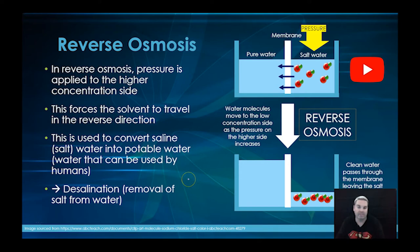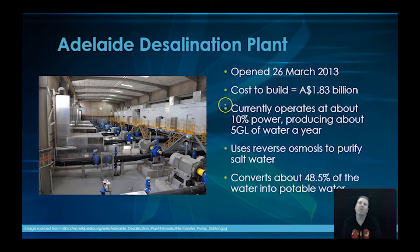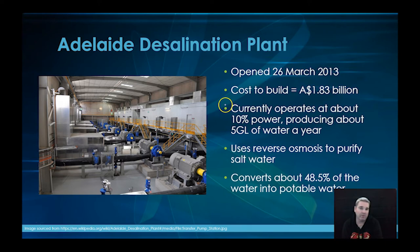I'll finish this video with a bit of info about the desal plant. It was opened on the 26th of March 2013, costs 1.83 billion to build — which I can't even get my head around — and for the first couple of years during a fairly major drought in South Australia it was operating at quite a high level. Now with better rain, it's only operating at about 10% power — about five gigalitres of water a year. It uses reverse osmosis to purify the water and converts about 48.5% of the water that comes through into potable or drinkable water.